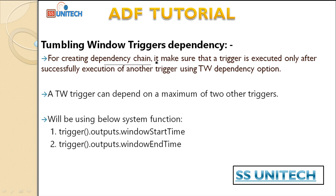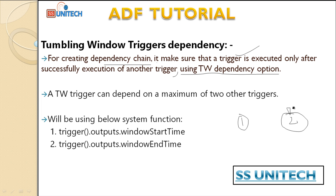So what is tumbling window trigger dependency? For creating a dependency chain, it makes sure a trigger is executed only after the successful execution of another trigger, and we can achieve this using the tumbling window dependency option. For example, we have trigger one and trigger two, and trigger two will execute only if trigger one executes successfully.